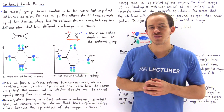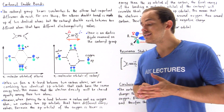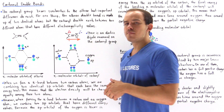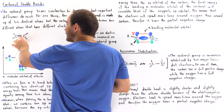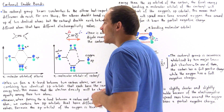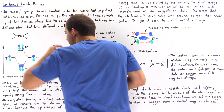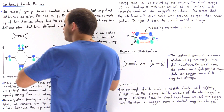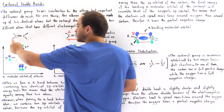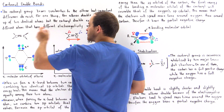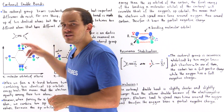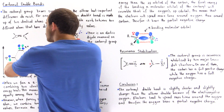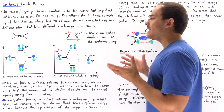Up to this point, the only double bond we've examined in great detail is the double bond between the two carbons in an alkene molecule. We have the sigma bond that is sp2 hybridized and also the pi bond. The pi bond is formed by the overlap of two 2p orbitals — one from each carbon. Because these are identical carbons with the same exact electronegativity, these two 2p orbitals will be of equal energy.